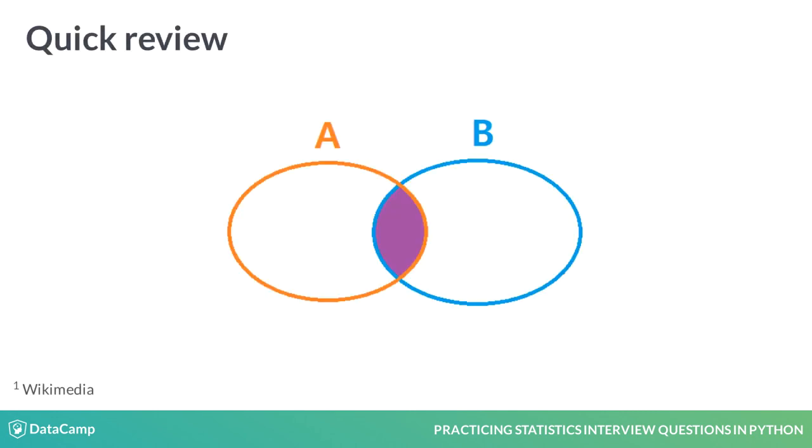The idea with conditional probabilities is that we want to figure out the probability of something happening, given that we have some additional information that may influence the outcome. In the Venn diagram shown, you can see the overlap between A and B representing the probability of both independent events occurring.